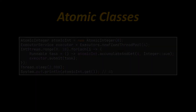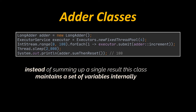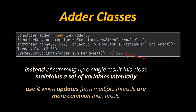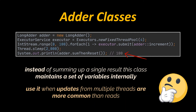As an alternative to atomic classes, we can use adder classes. For example, LongAdder can be used to consecutively add values to a number. It provides methods such as add and increment, which are thread-safe. However, instead of summing to a single result, this class maintains a set of variables internally to avoid thread contention. The actual result should be retrieved by calling sum or sumThenReset. LongAdder is preferable over atomic numbers when updates from multiple threads are more common than reads, such as when capturing statistical data. The drawback is higher memory consumption.